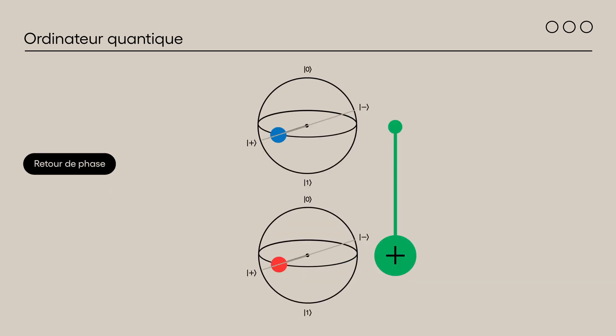Finalement, voici un exemple de retour de phase. Quand deux qubits sont dans l'état plus et qu'on applique un CNOT, rien ne se passe. En revanche, si le qubit cible est dans l'état moins, un retour de phase se produit sur le qubit de contrôle à l'application du CNOT sans changer l'état du qubit cible.